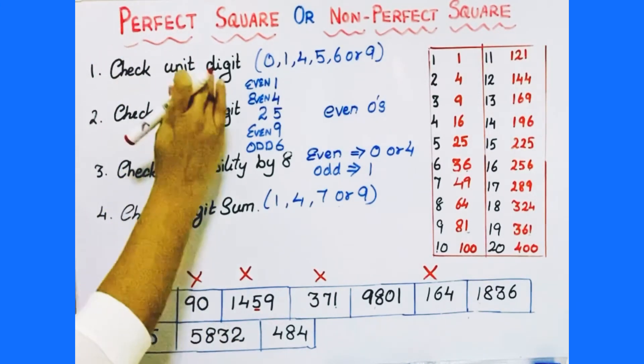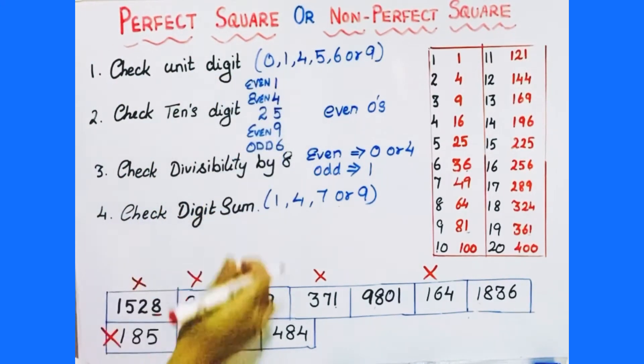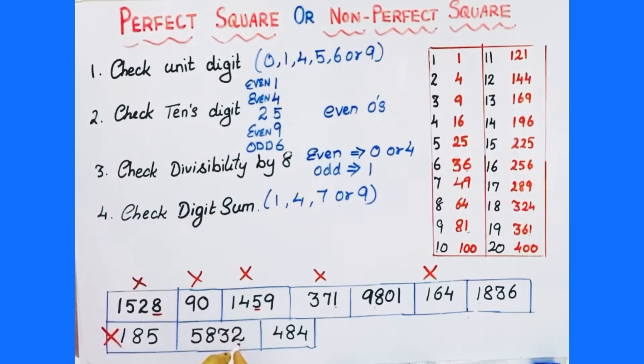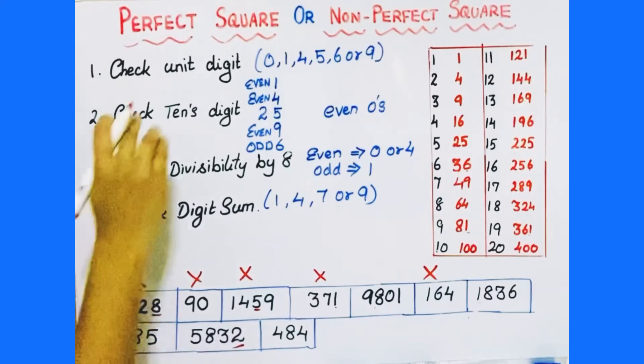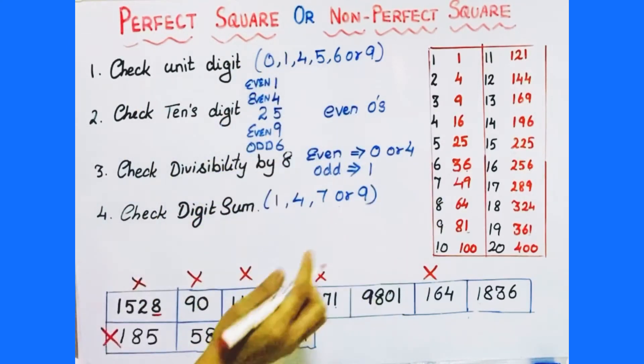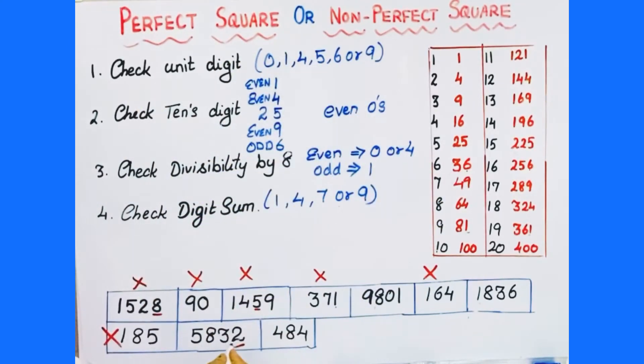Next number: check the unit digit — unit digit is 2. So it is not a perfect square number, as a perfect square can never end with 2.